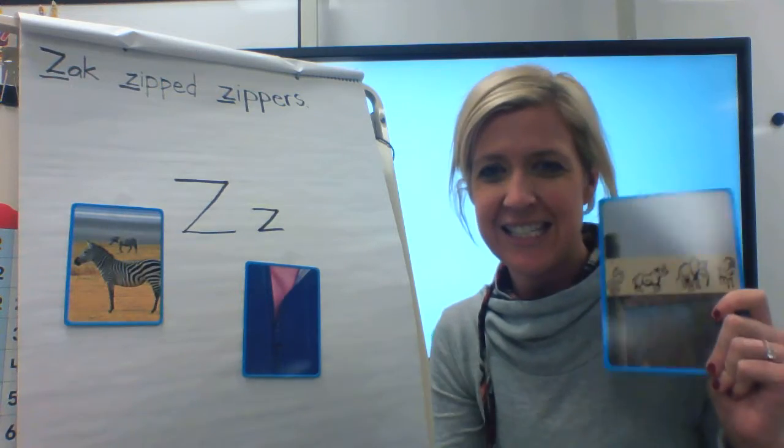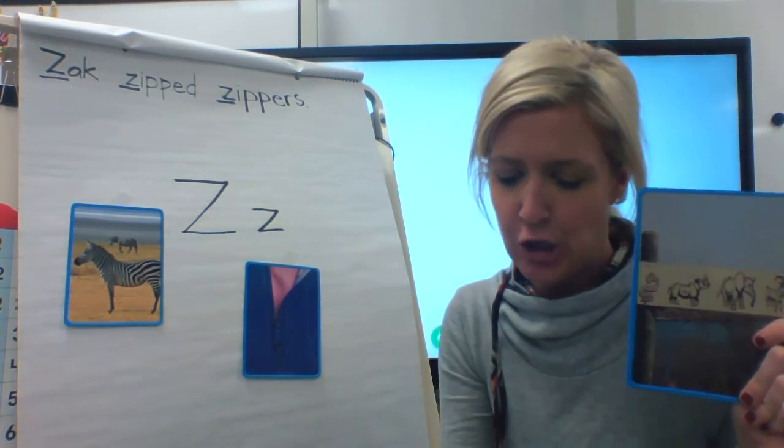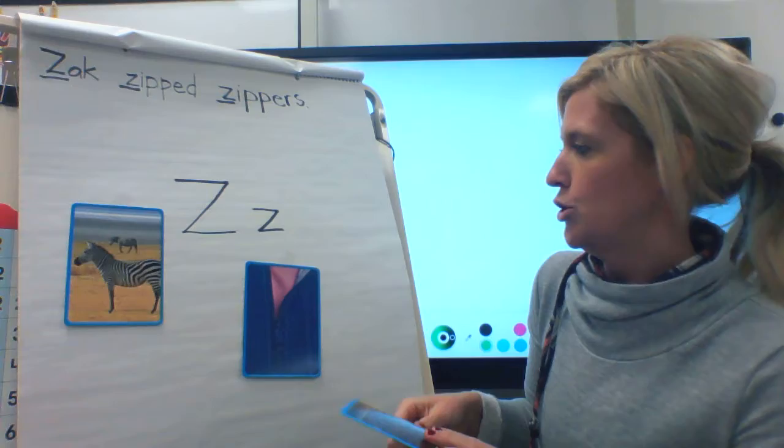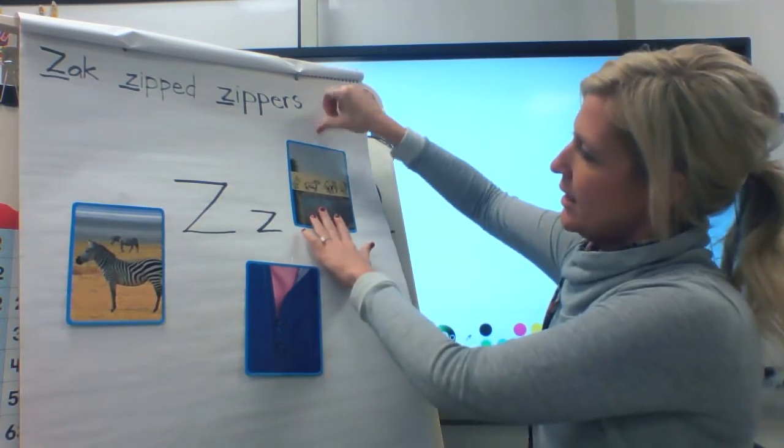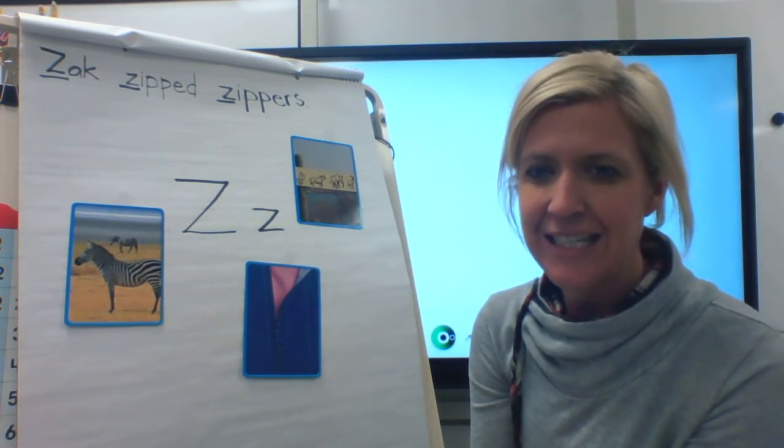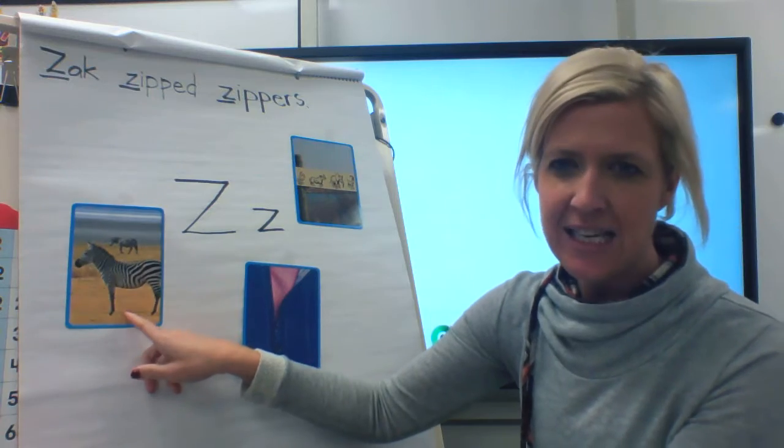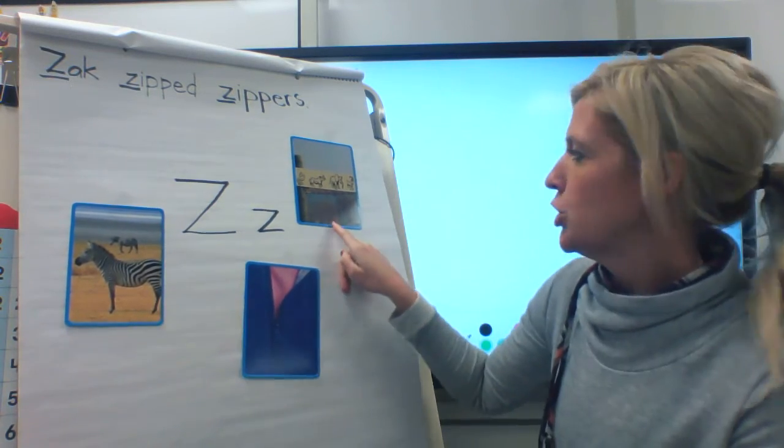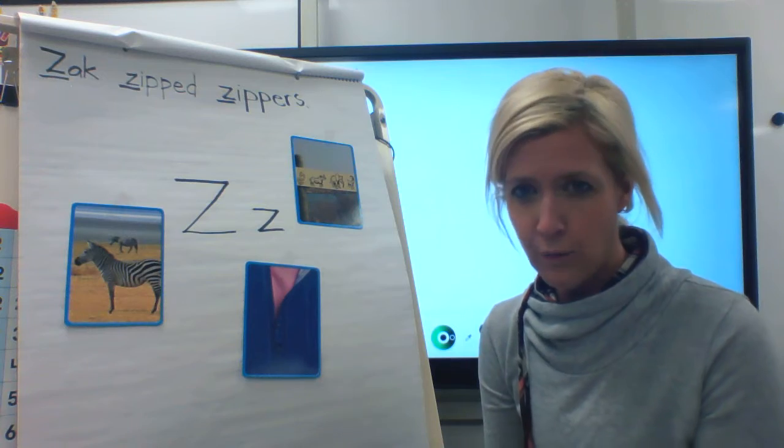Last one. Miss Cook has this, the Cincinnati zoo. Very good. Zoo. Awesome. All right. Let's go through our words one more time. Let's start with Z says zzz. Zebra. Zipper. Zoo. Great.